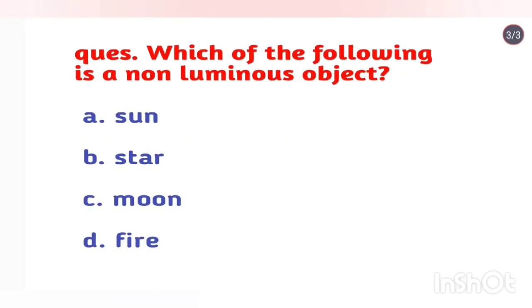Which of the following is a non-luminous object? Moon. The objects which do not emit their own light are called non-luminous objects. The moon, the non-luminous object, cannot make their own light.